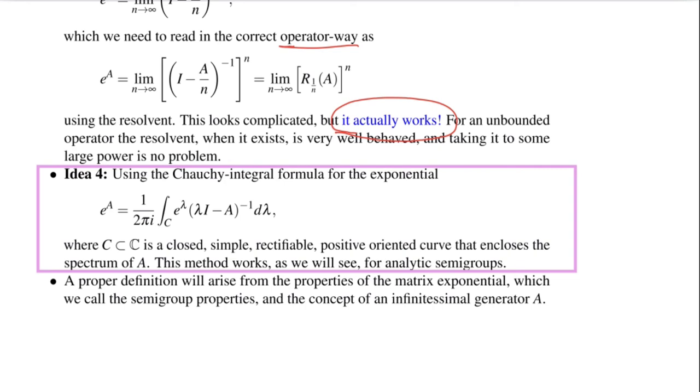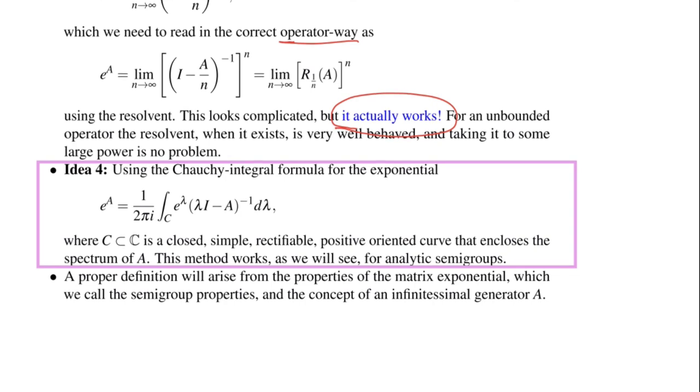Closed means the curve is closed. Simple means it doesn't have intersections, so it's not like an 8. Rectifiable means it is isomorphic to a circle, basically positive oriented. So this would be against the orientation of the clock. This would be like a curve C and then the spectrum of A is supposed to be inside here. And if we can do that, then we might be able to define a matrix exponential or an operator exponential this way. And this method works too.